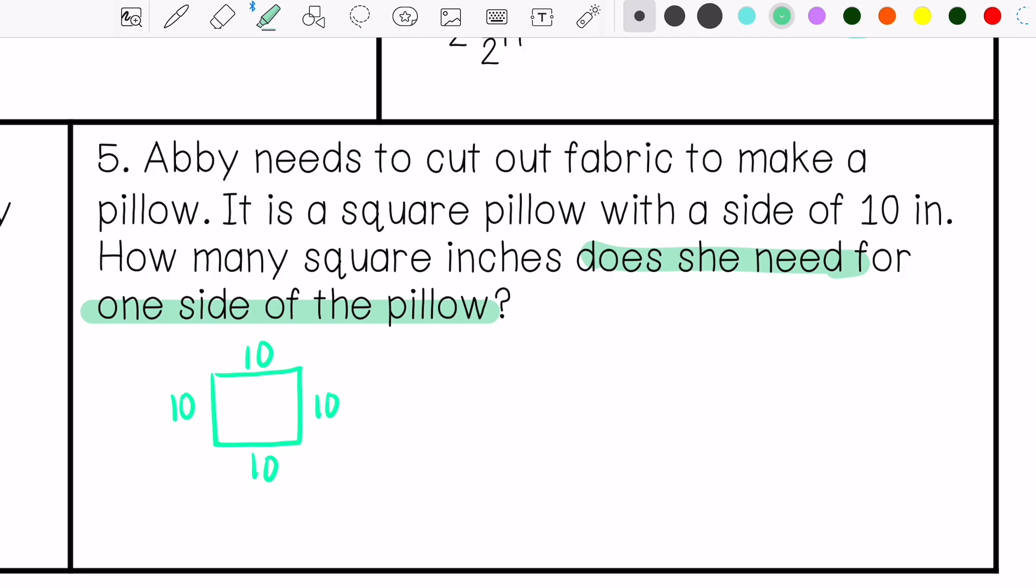So we're just, it's just asking how much fabric she needs for one side. So I don't need to, pillows are 3D objects. It's not asking about the whole entire pillow. It's just asking about one side of the pillow. So I do area equals base times height. That would be 10 times 10. And that would be 100 inches squared.